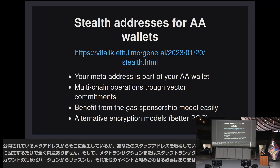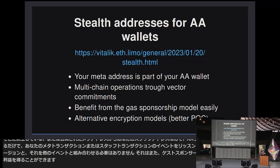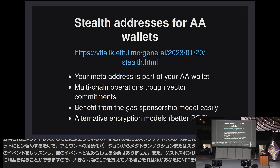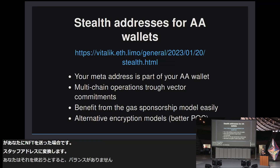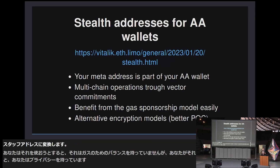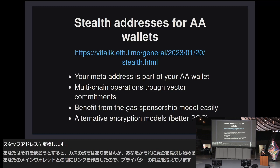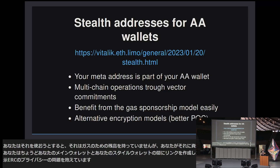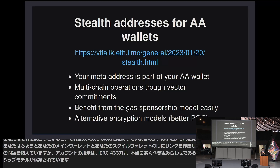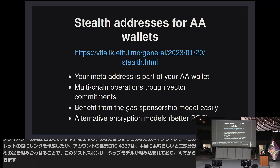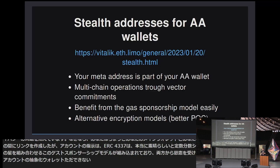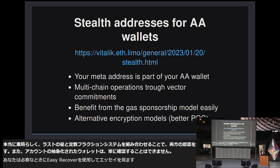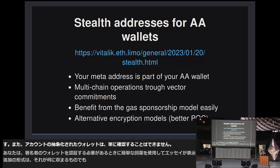Stealth addresses can also benefit from gas sponsorship most easily. One big issue is that if I send you an NFT into a stealth address and you try to spend it, it doesn't have a balance for gas. But once you fund it, you have a privacy issue because you just created a link between your main wallet and your stealth wallet. Account abstraction and ERC 4337 have this gas sponsorship model built-in, which is truly amazing. Combining stealth wallets with the account abstraction system benefits from both. Also, account-abstracted wallets aren't restricted to just ECDSA using ECRecover when authenticating your signer wallet — additional forms of encryption that fit within gas limits can also mean better post-quantum security.